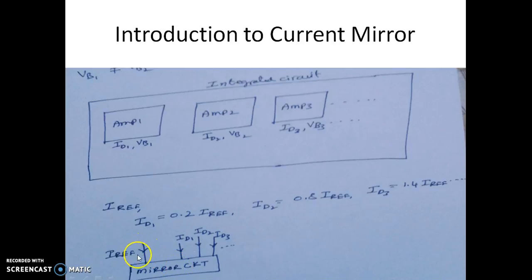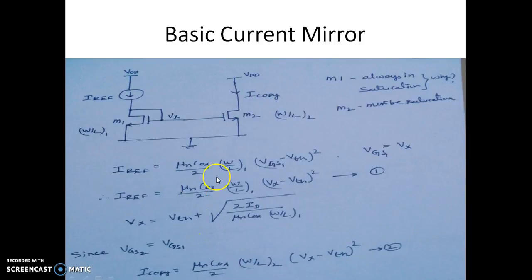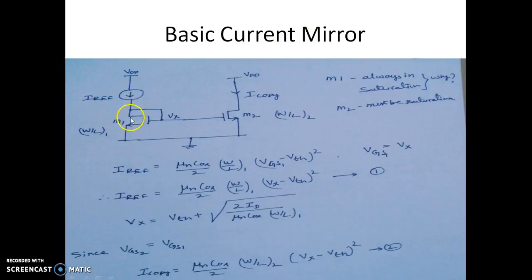Let us consider a basic current mirror circuit. Here you can see there is a current source having a current of I_reference. We have transistor M1, and the drain of M1 is connected in the circuit.